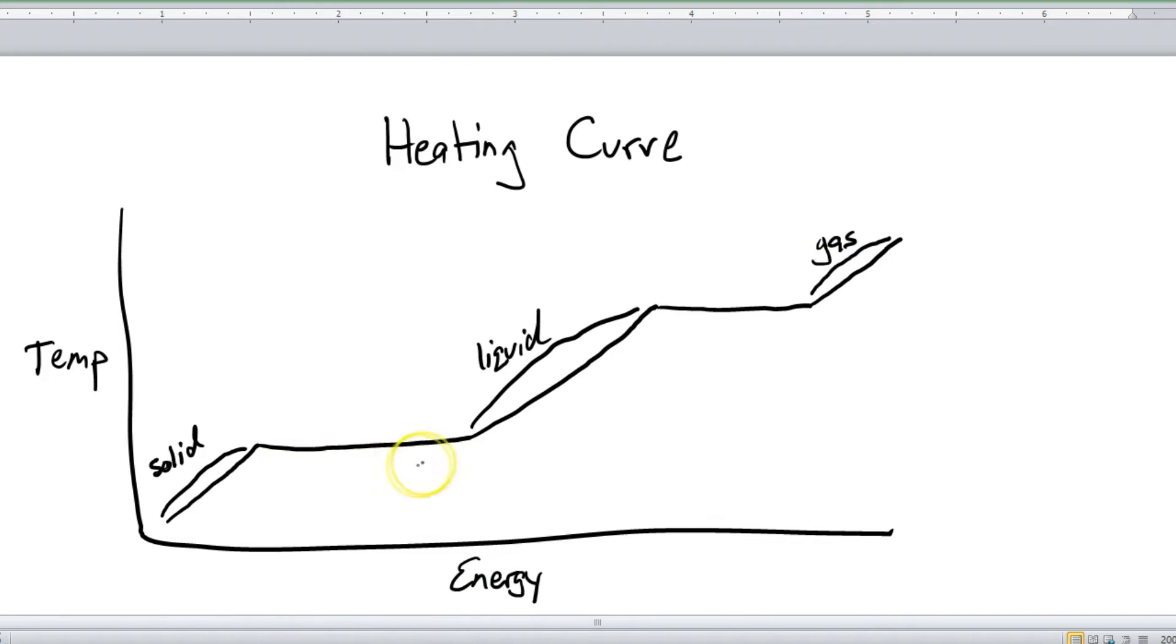So what about the two flat sections? Well this first one here that's between a solid and a liquid, when you're going from a solid to a liquid that's called melting. So that's going left to right. But if you're going the other direction, from a liquid to a solid, well that's called freezing.